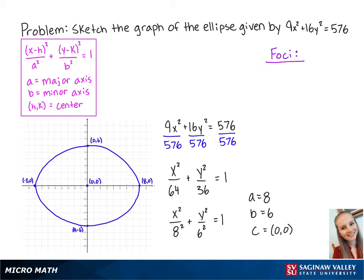In addition, we can also find the foci. We can do this by using the equation c squared equals a squared minus b squared, where c represents the distance from the center on the major axis.